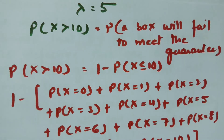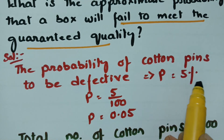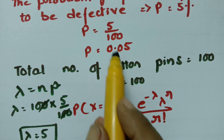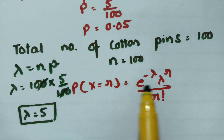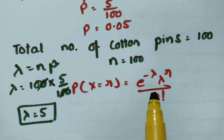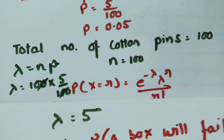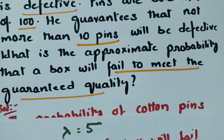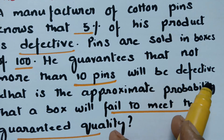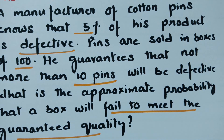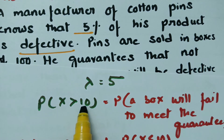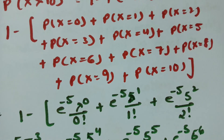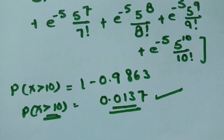To summarize: P is 5%, so defective pins are 5% and the box contains 100 pins. Lambda = 100 × 0.05 = 5. Since the mean is given, we use the Poisson distribution. The question asks for the probability the box fails the guarantee — i.e., more than 10 defective pins. So P(X > 10) = 1 − P(X ≤ 10), which gives the final answer of 0.0137.